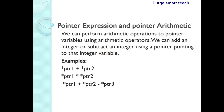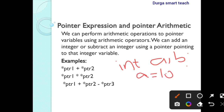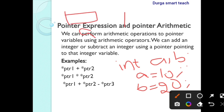A pointer is a variable which is used to store the address of another variable. For example, int a, b where a equals 10 and b equals 20. When you declare and initialize, memory is allocated for the variables and the values are stored in memory locations. Every memory location contains a unique memory address.